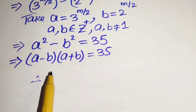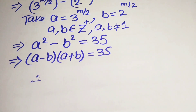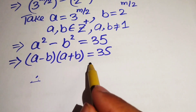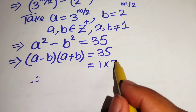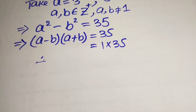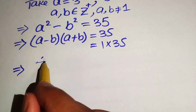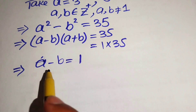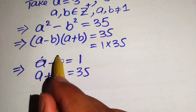On the left-hand side we have two factors multiplied, but on the right we have one number. So we convert 35 into a product of two factors: 35 equals 1 times 35. Comparing both sides, we get a minus b equals 1 and a plus b equals 35.